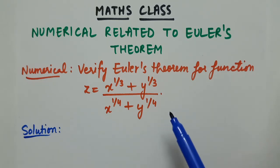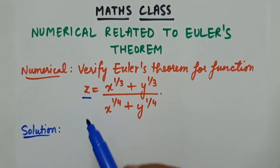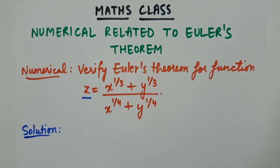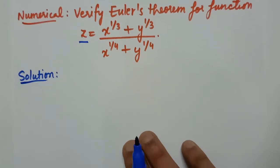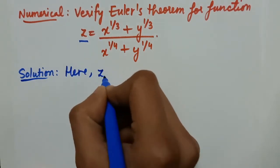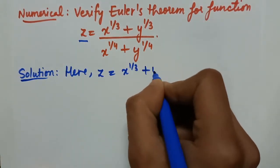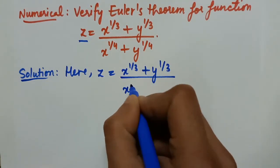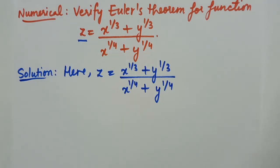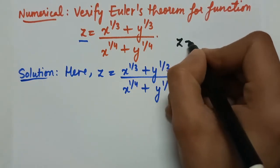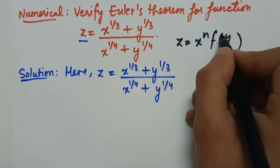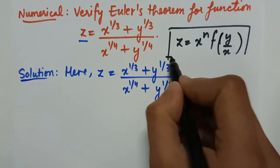To verify Ehlers theorem for the given function z, we first have to show that z is a homogeneous function. A homogeneous function has the form z = x^n · f(y/x), where n is the order of the function.